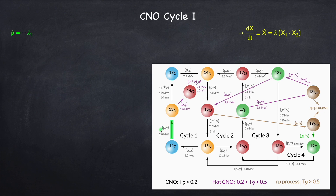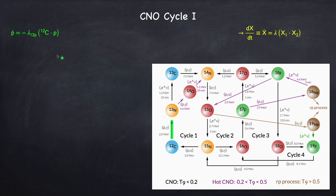First thing we're doing here is we're capturing a proton, so this is going to destroy a proton. So P-dot, the time rate of change of a proton or hydrogen, since we're destroying it, is going to be negative. It's going to be equal to some rate which I'm calling lambda-12P, times the product of the two particles involved. The two parent particles are carbon-12 and hydrogen, or a proton. So that's why we have C-12 and P here.